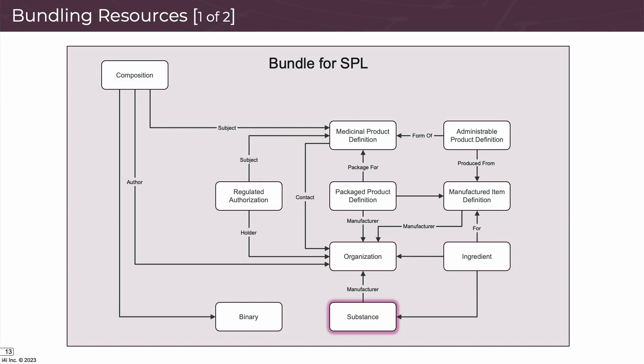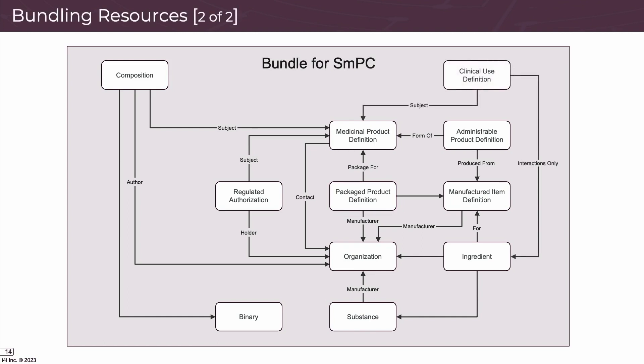The substance resource is the substance as it is separate from the product, and it links to the organization involved in its manufacturing. The packaged product definition resources hold all of the packaging details and link to the medicinal product they're contained within as well as to the manufacturing organization. If we were creating a European EPI for an SmPC, we'd also include the clinical use definition, so these documents can have IDMP metadata related to indications, contraindications, interactions, warnings, and undesirable effects.